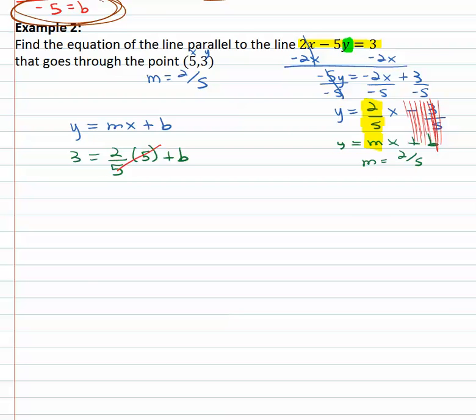It's kind of nice, the fives divide out, so we have three is equal to two plus b. And finally get the b alone by subtracting two and b is equal to one.